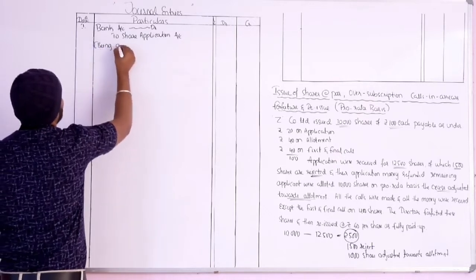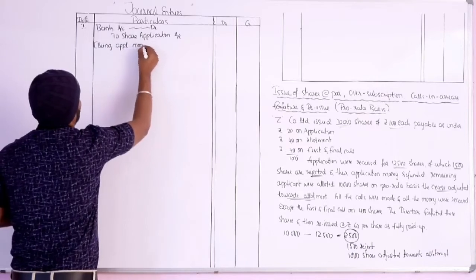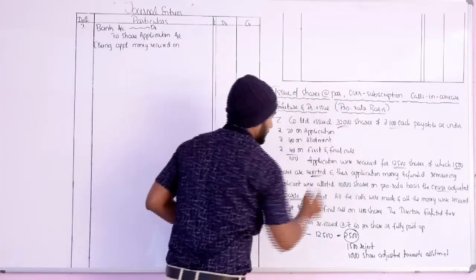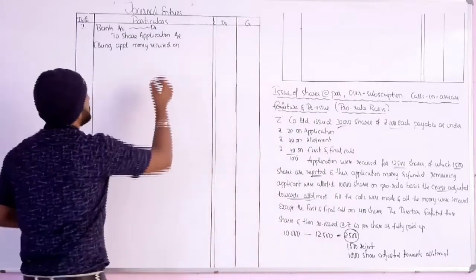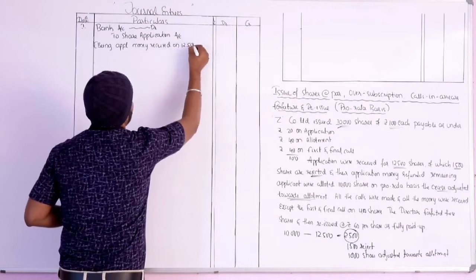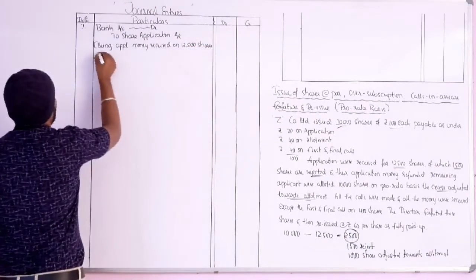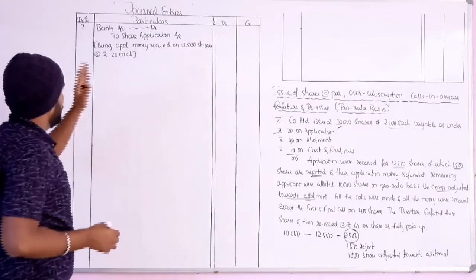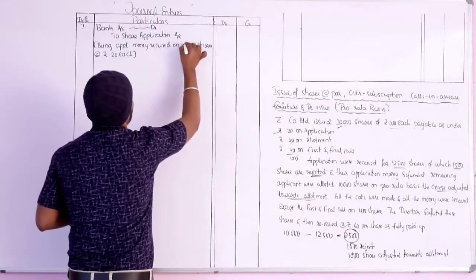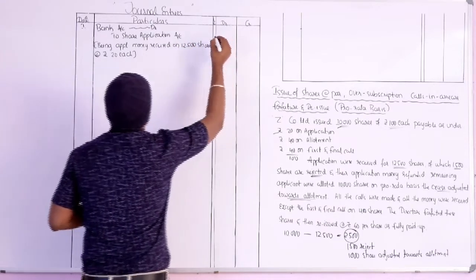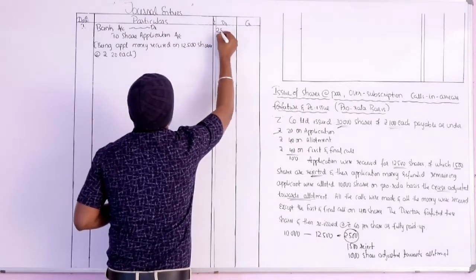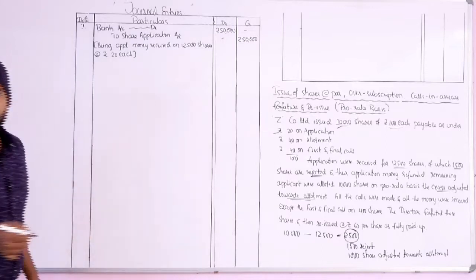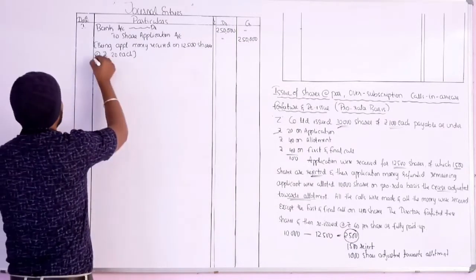Application money received on 12,500 shares at ₹20 each: 12,500 × 20 = ₹2,50,000 debit, ₹2,50,000 credit. Bank Account debit to Share Application Account: ₹2,50,000. Narration: application money received on 12,500 shares at ₹20 each.